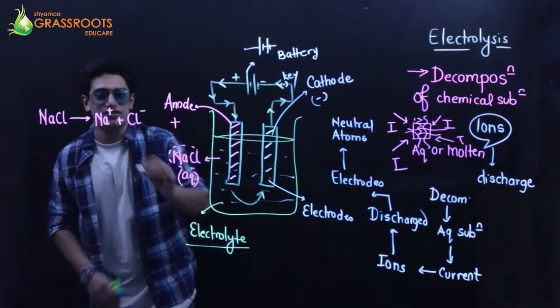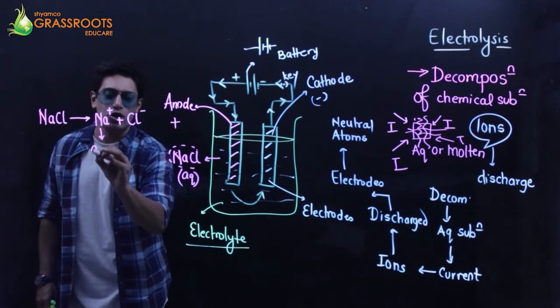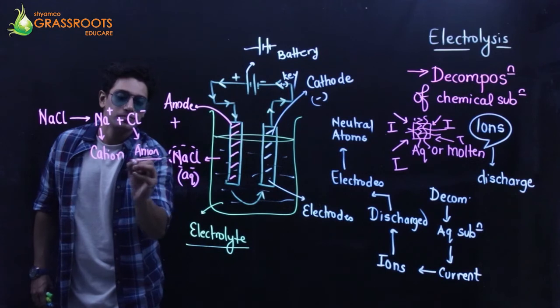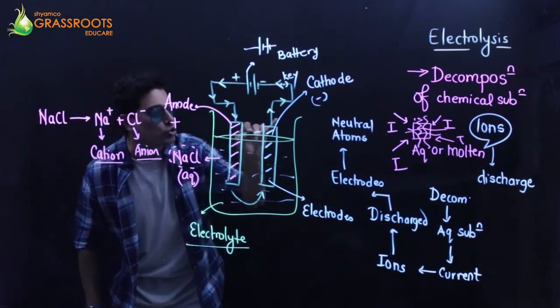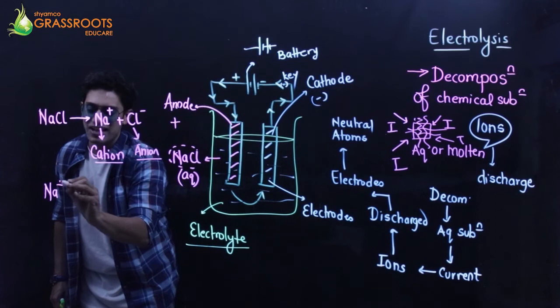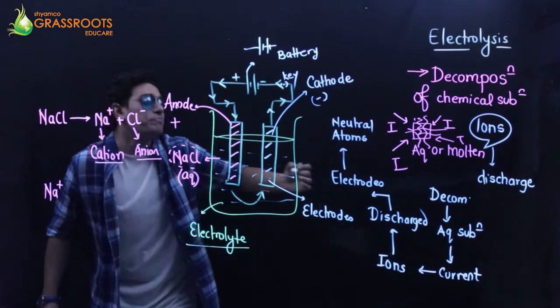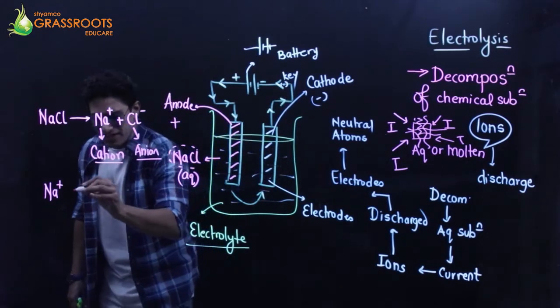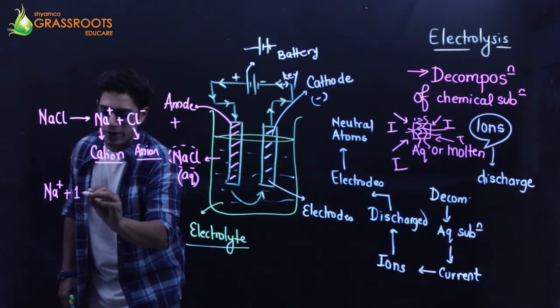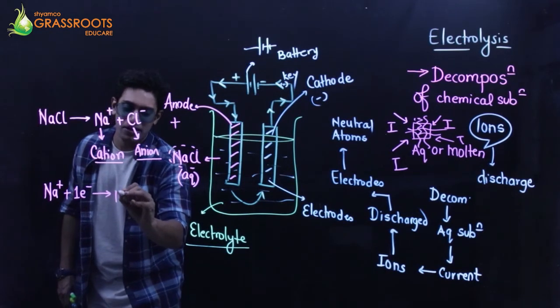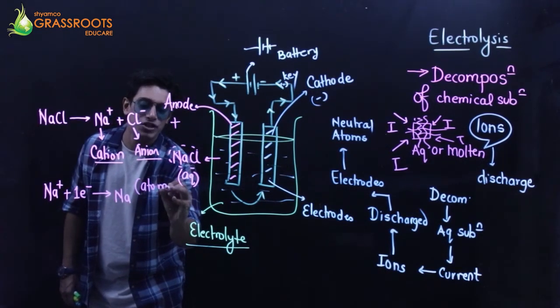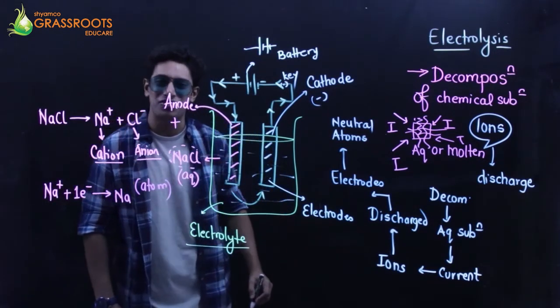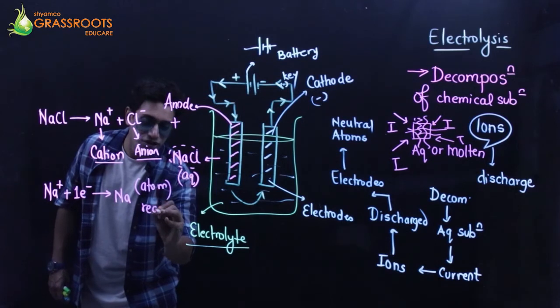The positive ion is called a cation and the negative ion is called an anion. The cation flows towards the cathode. The cathode is an electron donor - it gives one electron. It becomes sodium atom, a neutral atom because it has lost the charge. This process is called reduction.